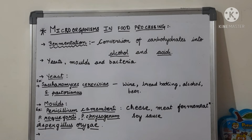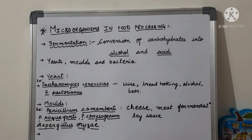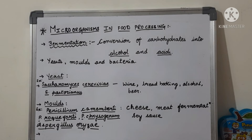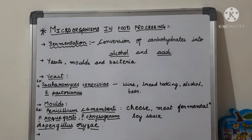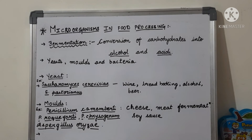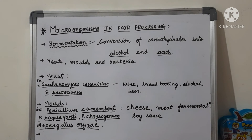The examples of microorganisms used are yeast, moulds, and bacteria. Firstly, yeast — among which Saccharomyces cerevisiae is a very good example, used extensively and industrially in the production of various food and non-food products. Saccharomyces pastorianus is another example. These two varieties have been used in the production of wine, bread baking, alcohol, and beer.